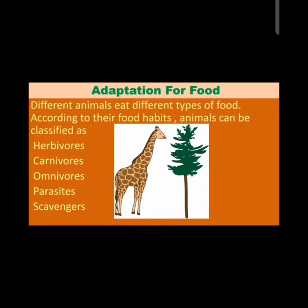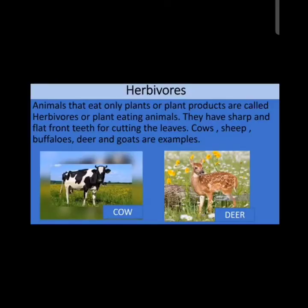Different animals eat different types of food, and according to their food habits, animals can be classified as herbivores, carnivores, omnivores, parasites, and scavengers. Let's discuss them one by one. First is herbivores — animals that eat only plants or plant products are called herbivores, or plant-eating animals.